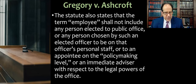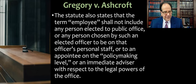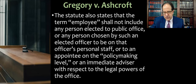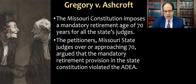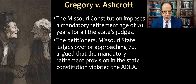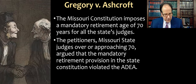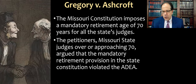Congress exempted those types of officials. If voters don't want to vote for somebody in the state legislature or a governor because they think the person is too old, they're allowed to do that — that person doesn't have job protection because of this. So the statute doesn't really cover elected officials and policymaking officials. But then we get to the Missouri Constitution, which imposes a mandatory retirement age of 70 on all the state's judges. Missouri state judges approaching 70 argued that this mandatory retirement provision violated the federal law.